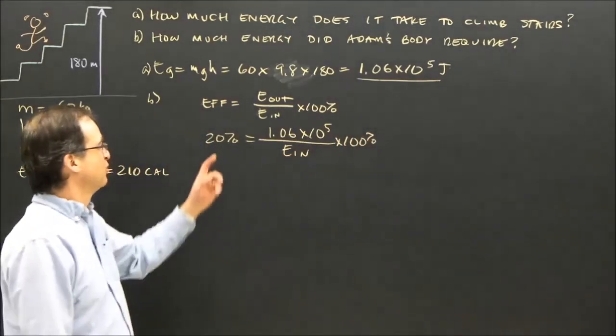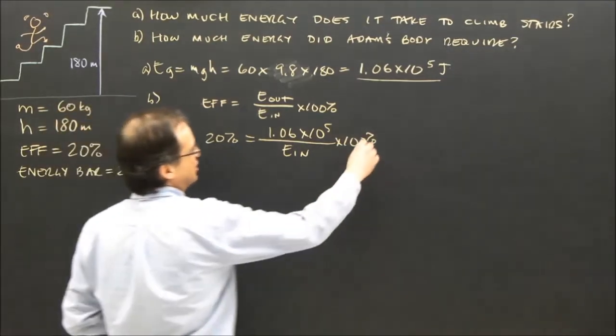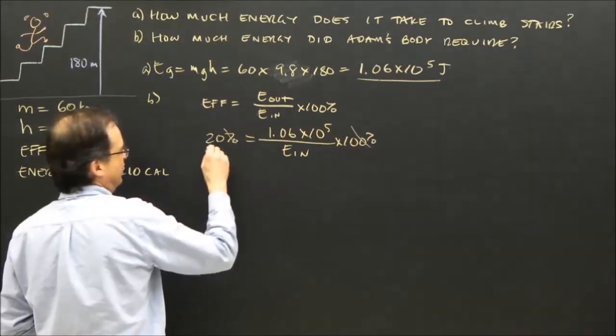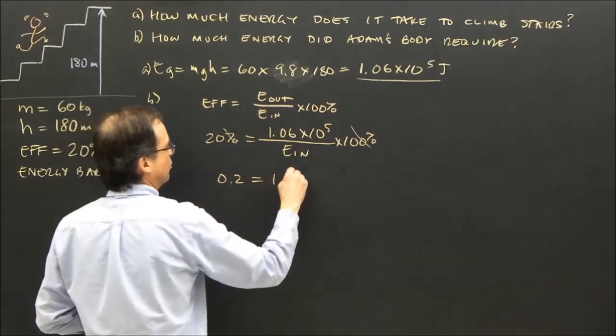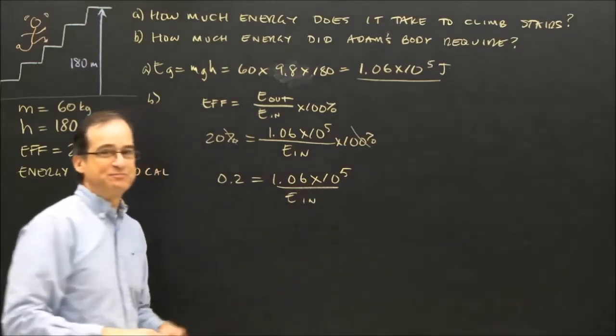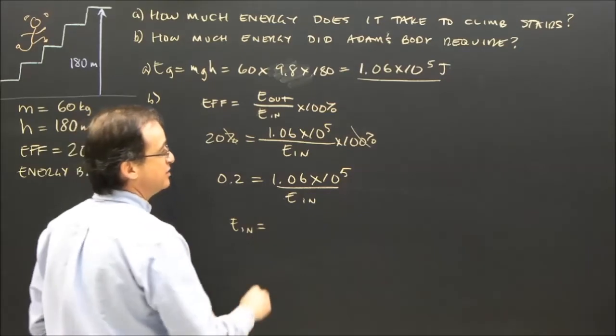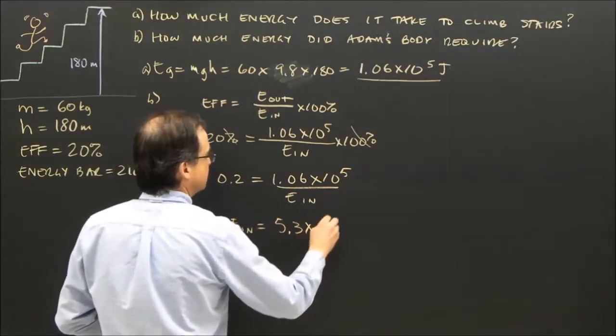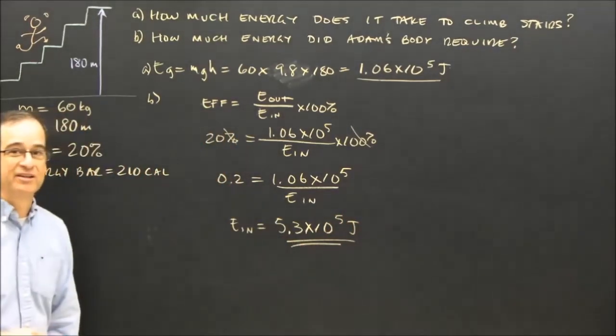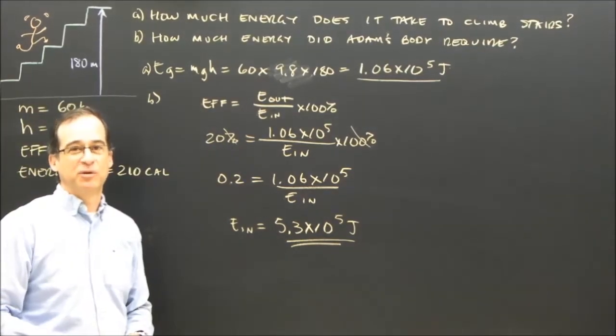Now, I think most of you know 20% is 0.2, but the way you get that is you divide by 100%, divide by 100 and the percent, and you get 0.2 is 1.06 times 10 to the 5 over the energy in. I rearrange that. The energy in is 5.3 times 10 to the 5 joules. There's my answer. It took that much energy. It was more energy than he got out of it because he's only 20% efficient.